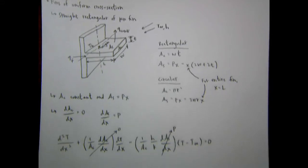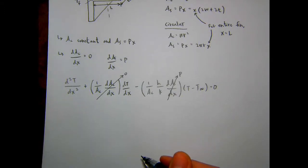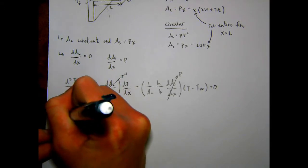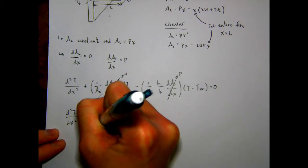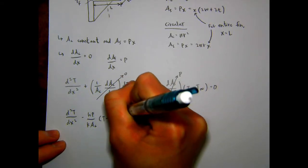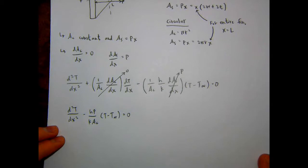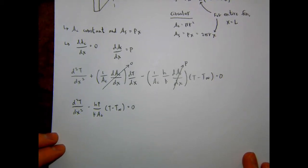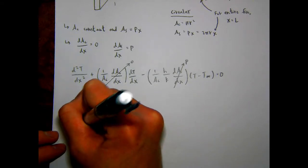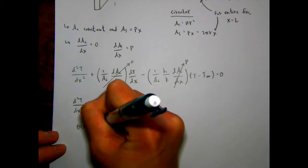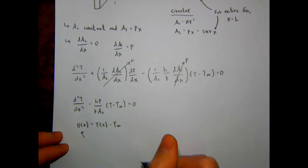Applying this geometry to the general differential equation and simplifying gives us: d²T/dx² minus (hP/kA_C)(T - T_infinity) = 0. Now we do a substitution to make solving easier: define θ(x) = T(x) - T_infinity, called the excess temperature — basically the temperature difference between the fin and the ambient air.